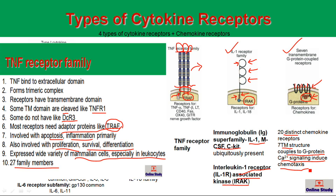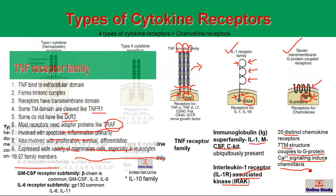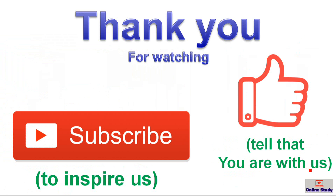So these are all five types of cytokine and chemokine receptors. I hope you have understood the basic types and classification of chemokine and cytokine receptors. Thank you for watching — if you feel this is easy to understand, please subscribe, like, and do not forget to share.